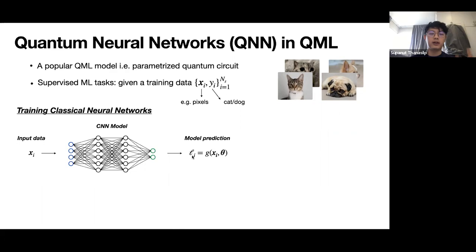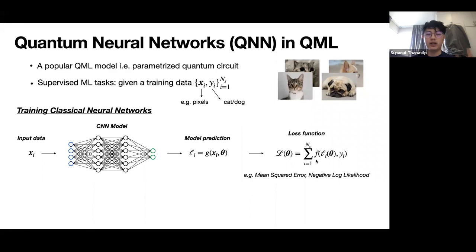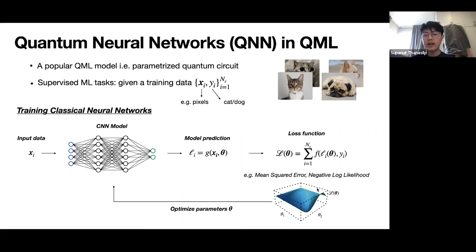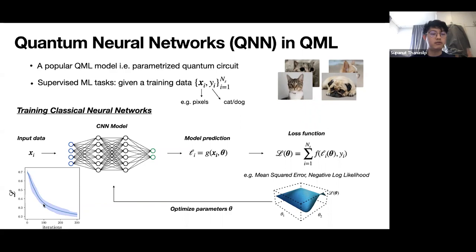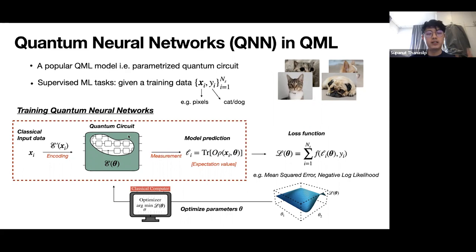The loss function gives you a landscape you want to navigate to find the minimum — you tweak parameters iteration by iteration, and the loss goes down. Now with a quantum neural network, instead of a classical neural network you replace it with a quantum circuit. The parameters here, instead of weights and biases, might be gate rotation angles. Since it's a quantum device, if your input is classical data like a pixel, you need an additional encoding step to encode your classical data into the quantum circuit.